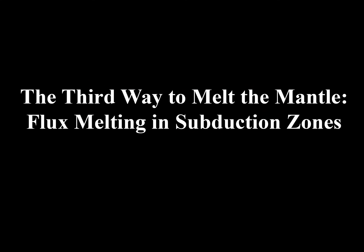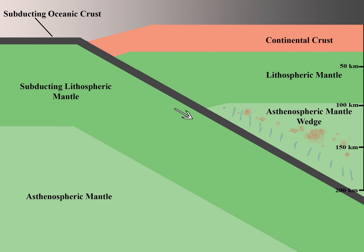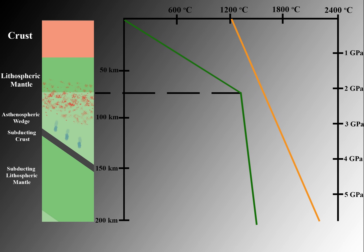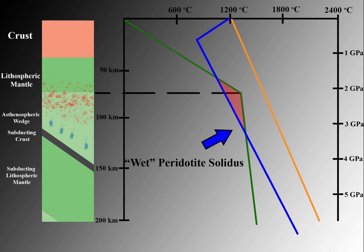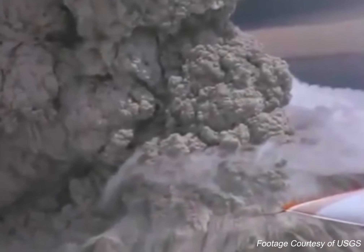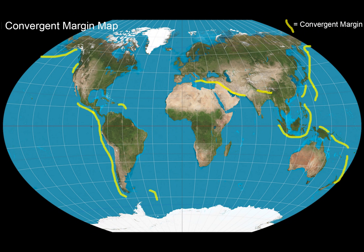The third way to melt the mantle is by adding water, as in the case of a subduction zone at a convergent margin. The subducted plate releases water as it gets deeper in the earth. Water interacts with the peridotite in the mantle, changing its melting point — represented on the diagram by replacing the dry peridotite solidus with a wet peridotite solidus. Wet peridotite melts at much lower temperatures than dry peridotite, allowing a normal geotherm to intersect it, causing melting in the mantle wedge above the subducted plate. Mount St. Helens is an example of a volcano fed by magma generated in a subduction zone. Here is the global distribution of convergent margins.